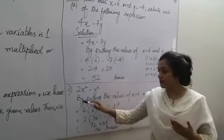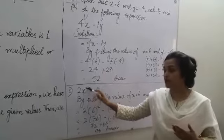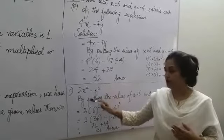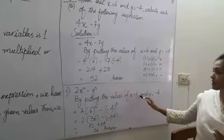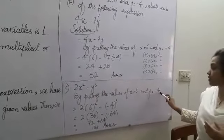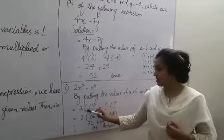Here is another example. 2x squared minus y cubed. By putting the value of x is equal to 6 and y is equal to minus 4, like this.